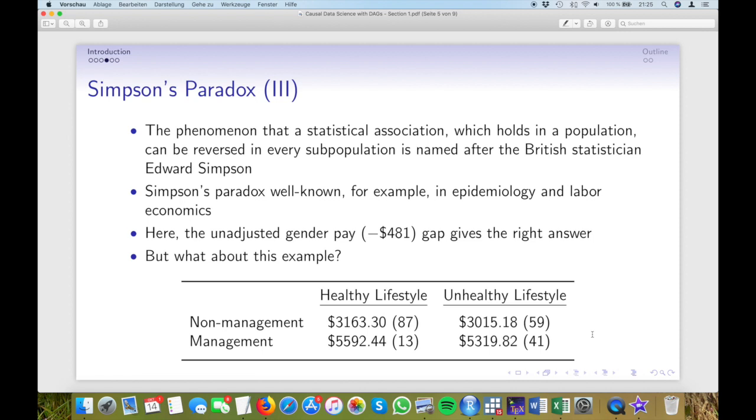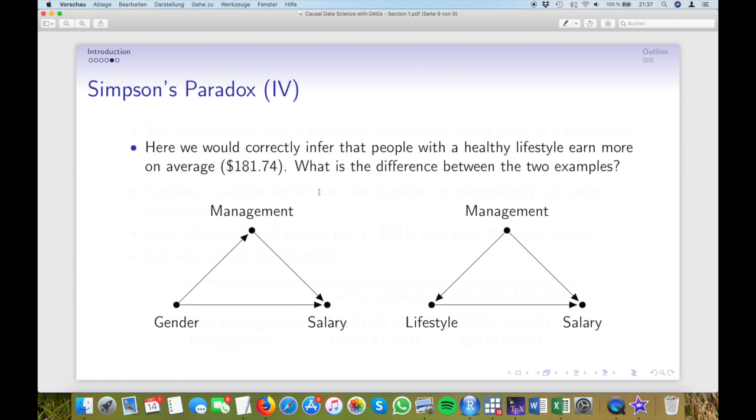So that means we will also find the same averages again. The simple average will give us a negative difference of $481, which would mean that healthy people earn less. But the adjusted average would lead to a positive difference. Which one is the correct answer this time? What would you say? It turns out that this time it's the adjusted pay gap that gives us the right answer. So people with a healthy lifestyle earn on average $181.74 more. But how can that be? Wasn't the data exactly the same in both examples? I've just exchanged the labels of one variable from female and male to healthy and unhealthy. How can that make such a big difference in the results we get?